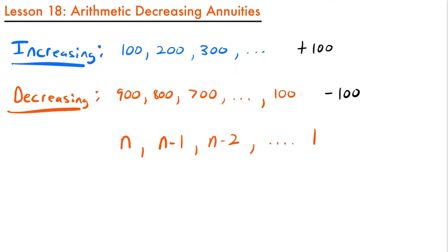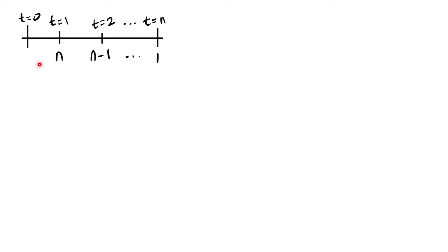If we want to calculate the present value or future value of an arithmetic decreasing annuity where payments follow this arithmetic progression, we need a closed-form formula for those calculations. To find it, we'll analyze this general example of payments forming an arithmetic decreasing progression. Here's a timeline of our scenario.